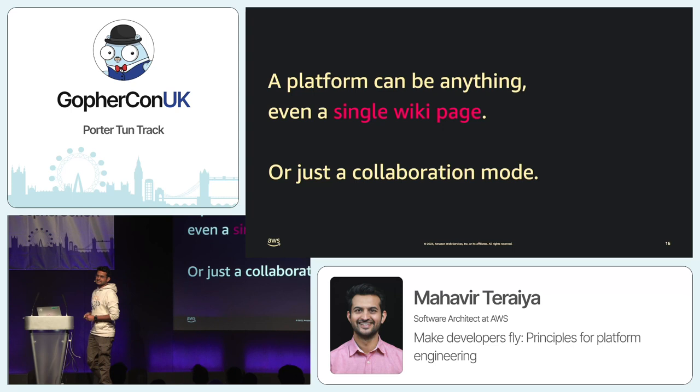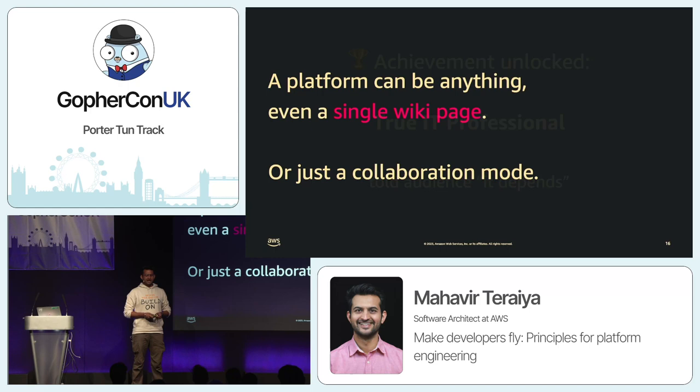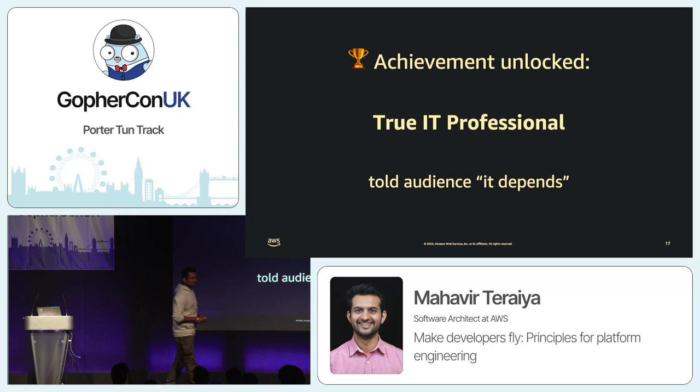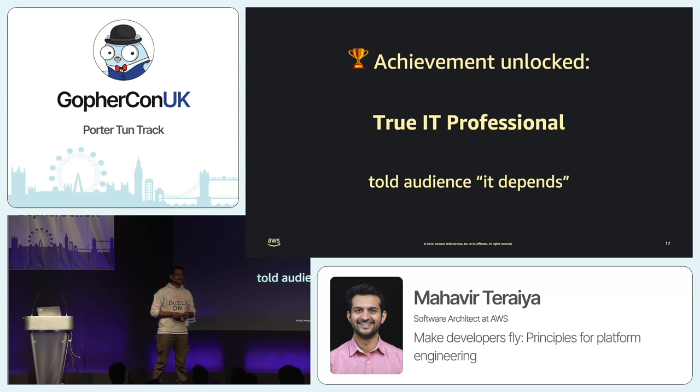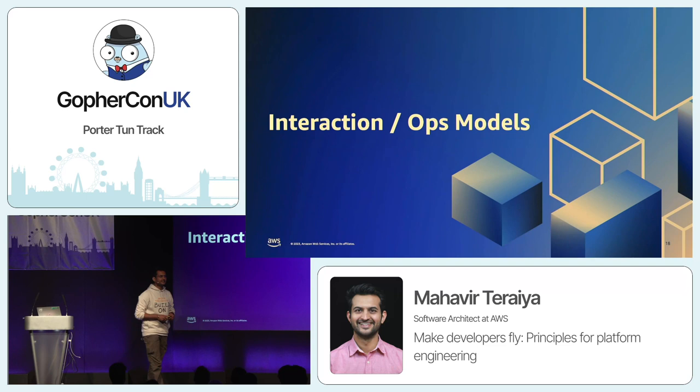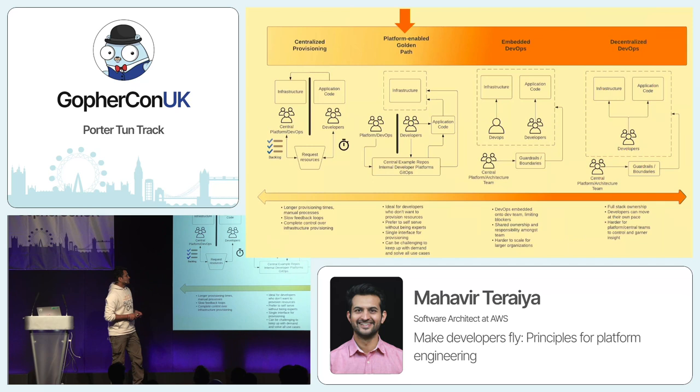The obvious question might be: what does a good platform actually look like for me? The answer is, it depends. That's what you hear most of the time from architects when you ask a complex question — it depends. But what does it depend on? For that, we need to check some operational models which will help us understand which particular platform model is best for a given situation. My colleague Adam brought a paper on this, where he defines there are generally four kinds of operational model when it comes to a developer platform.